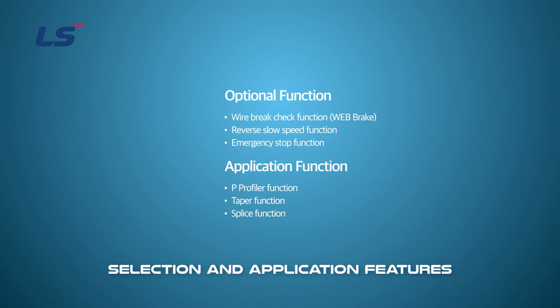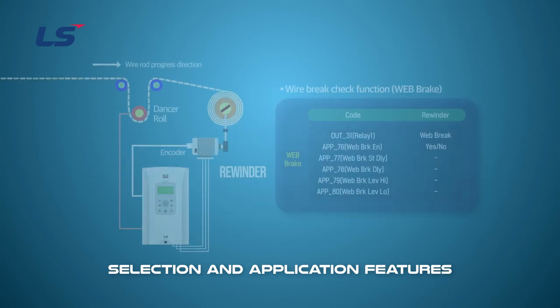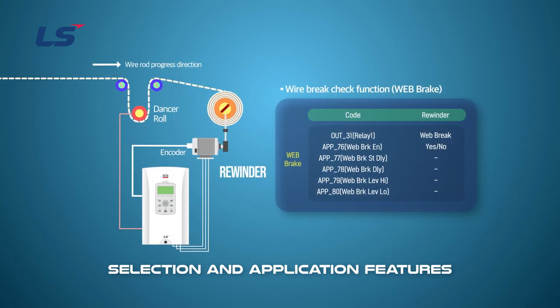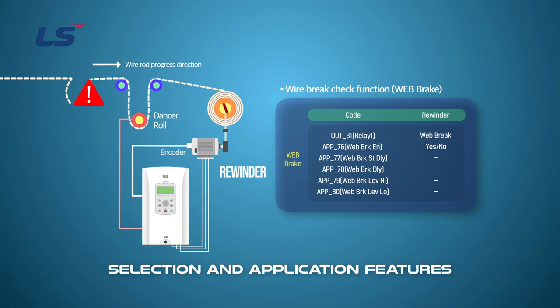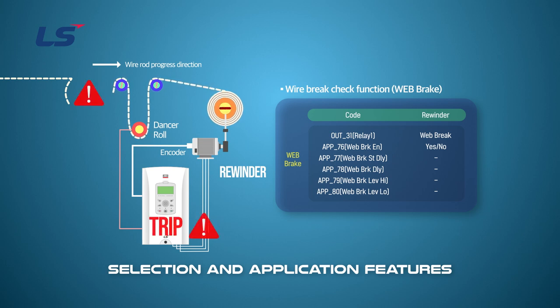The following features can be used to achieve better performance in the winder application. The web brake function allows the inverter to detect and protect materials when they are cut while driving. When the material is cut in the interlocking system, the load is generally reduced, and the inverter checks this and generates a trip to protect the equipment.